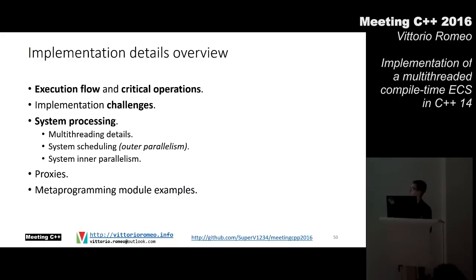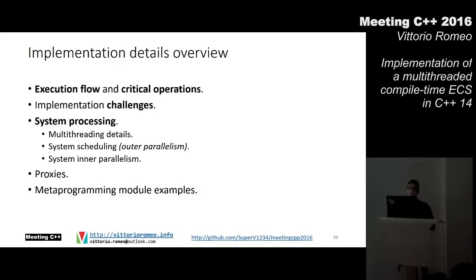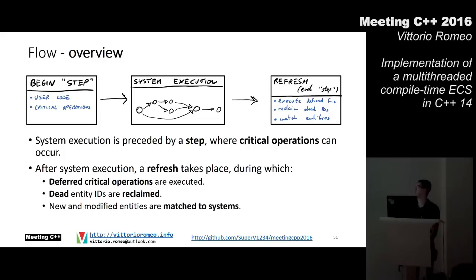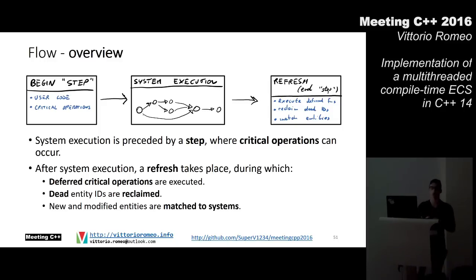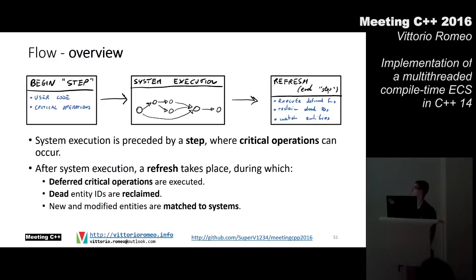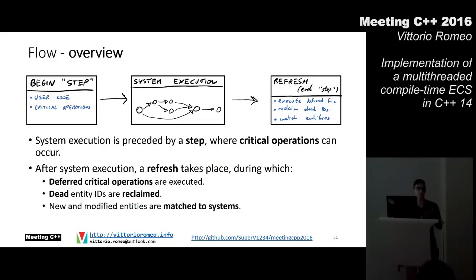I'm going to cover the execution flow and critical operations. The flow is: a begin step where we inject user code with some critical operations; then system execution — a self-contained step where the chain of parallel operations executes; then a refresh step at the end which executes deferred operations, reclaims memory of dead entities, and matches modified and new entities to systems. New entities created during system execution are only actually created during the refresh step, at which point they are subscribed to matching systems for execution on the next step.